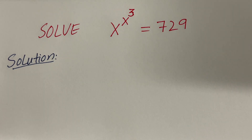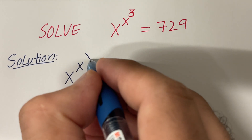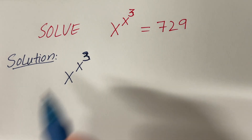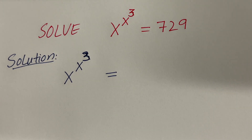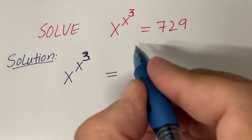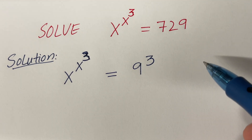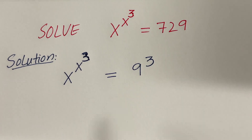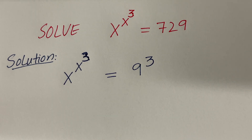The left hand side of the given equation is x raised to the power x raised to the power 3. On the right hand side I have 729, and 729 is 9 raised to the power 3. You can take some time to find factors of 729 and you will see 729 is equal to 9 raised to the power 3.